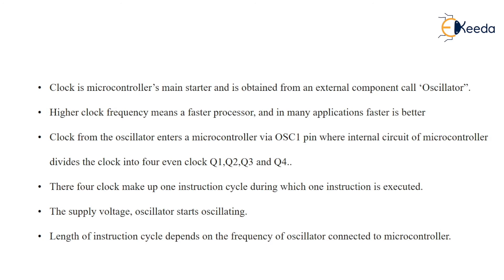Therefore, four clocks make up one instruction cycle, during which one instruction is executed. These four cycles — Q1, Q2, Q3, Q4 — form one instruction cycle. During one instruction cycle, four processes happen: fetch, decode, process, and store. The instruction is fetched, decoded, processed, and finally the result is stored after processing.